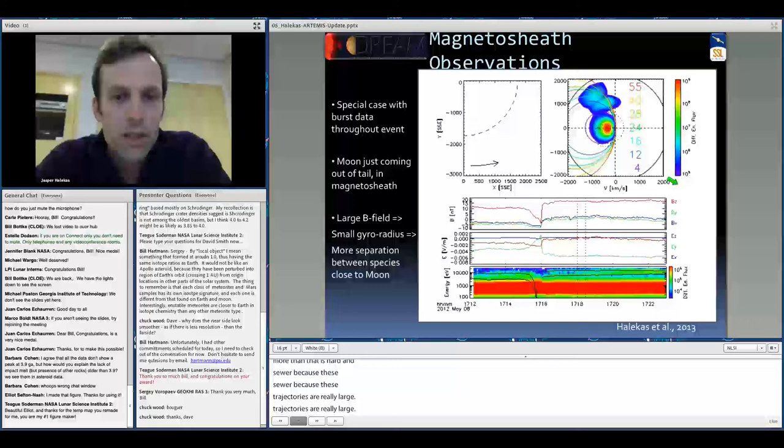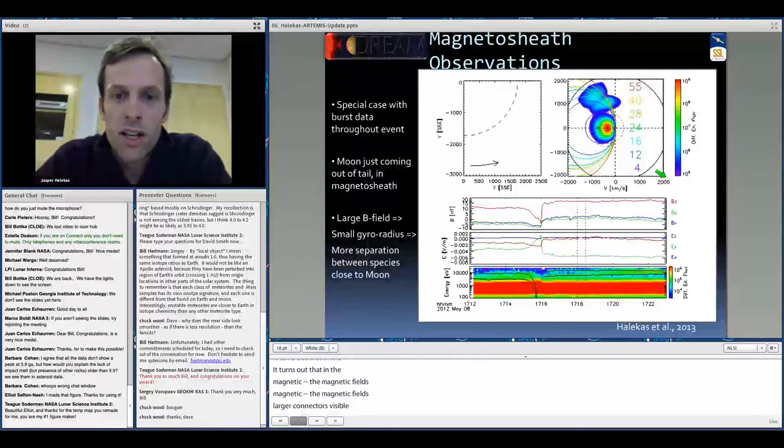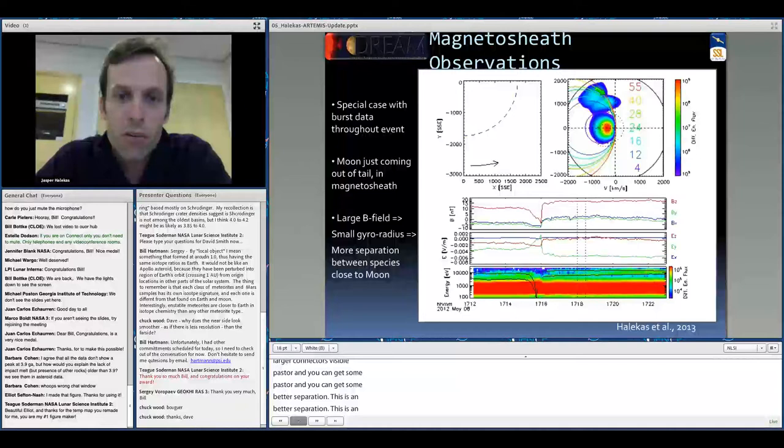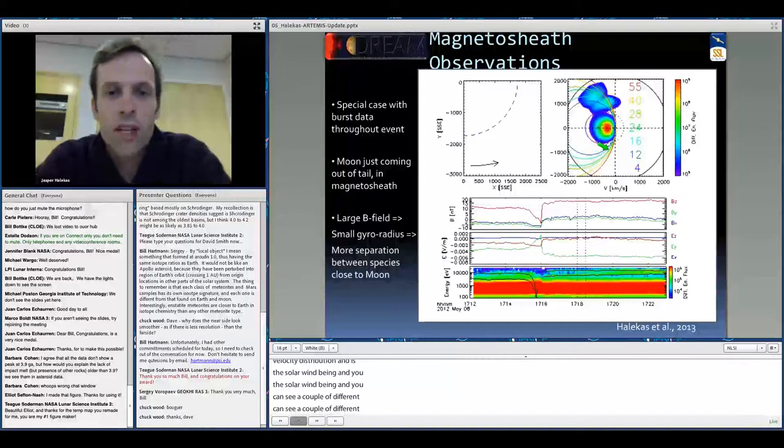It turns out that in the magnetosheath, the magnetic field is larger, and the trajectories bend a little bit faster, and we can get some better separation. This is an example of an observation in the magnetosheath, and you can see that now this is a velocity distribution. This is the solar wind beam here, and you can see a couple of different components to the pickup ions here. You can also see this in the spectrogram format down here.